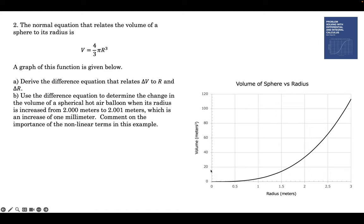We have a graph of the function. The volume is on the vertical axis, radius is on the horizontal axis. Part A asks to derive the difference equation that relates delta V to r and delta r. So if I start off at some radius r and I increase the radius by delta r, what's the change in volume? Delta V.